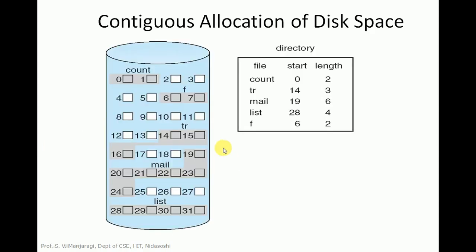Let us take an example and discuss contiguous allocation. There is a directory with several entries. The directory maintains three pieces of information: file name, starting block, and length. In contiguous allocation, just the starting block and length are sufficient to allocate blocks to a file in a contiguous manner. In this particular directory there are five files: count, pr, mail, list, and F.